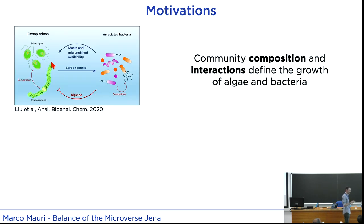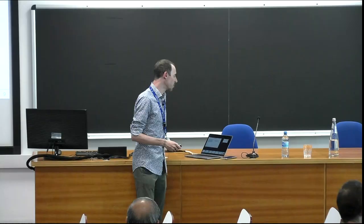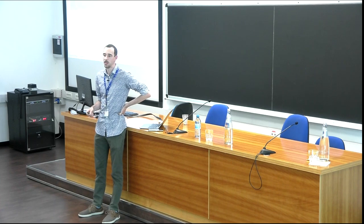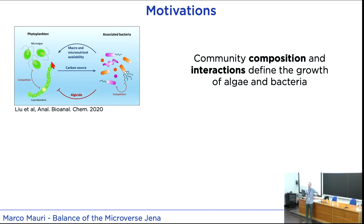Regarding nutrient competition: it's not always the case that carbon sources flow only from phytoplankton to bacteria. Most of the time they share a common carbon source, but it depends on the species. Bacteria prefer glucose and carbon-rich compounds, while algae can also rely on light. When nutrients or light are not enough, they can compete for the same resources. Phytoplankton also use complex nutrients that are more difficult for bacteria to internalize, so competition can occur.